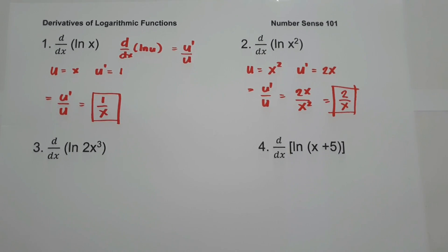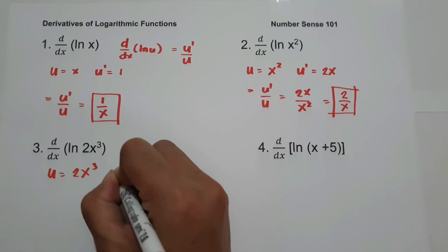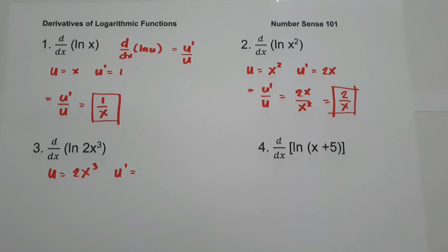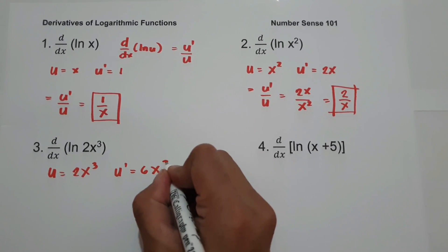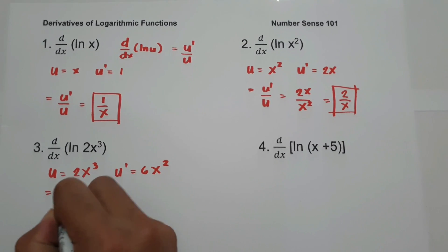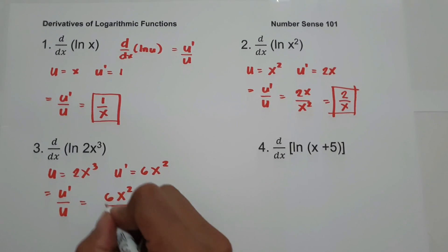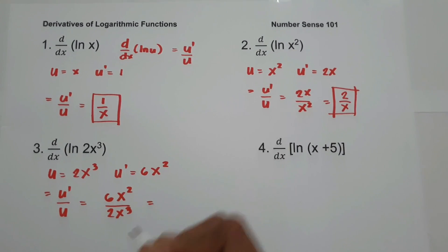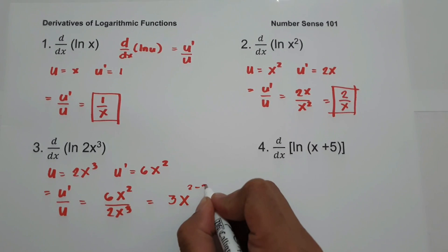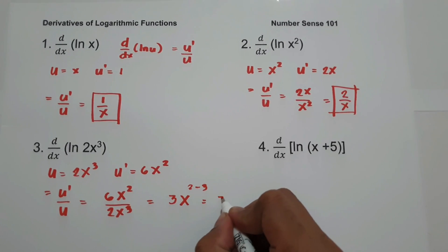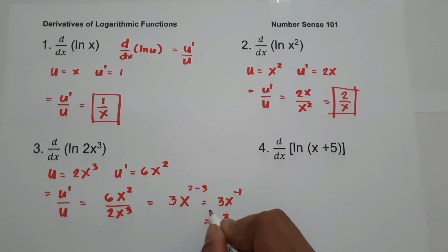Number three: find the derivative of ln(2x³). Let u = 2x³, so u' = 6x². Applying u' over u gives 6x² over 2x³. Simplifying: 6 divided by 2 is 3, and x² over x³ gives x raised to negative 1. So our final answer is 3 over x.